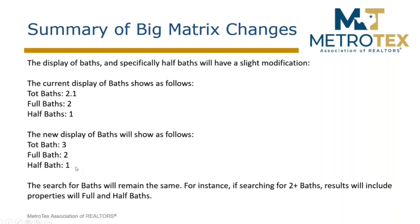If you search for baths, just like in the current system, if you put in two-plus, you're going to get two-and-a-half baths, three baths, three-and-a-half baths. There's a listing in the system that has five full baths and eight half baths — look for it. In the MLS it would show total baths as 13 with five full and eight half. Your ability to search for two-plus baths has not changed — it will remain the same and will pick up half baths and full baths no matter what.